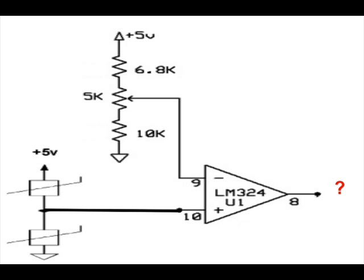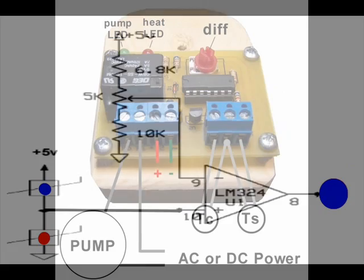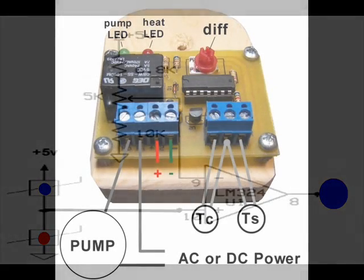For now, let's be content with understanding that the plus input of the op-amp is controlled through the common junction of the thermistors, and the minus input is controlled with an adjustable voltage divider. When the temperature of the collector is higher than the storage temperature, the op-amp output goes high. When the collector gets colder than the storage tank, the op-amp output goes low. This is the basic idea, but there are more concepts to consider. Check out differential controller 102 for details on the latch circuit and the chatter control.